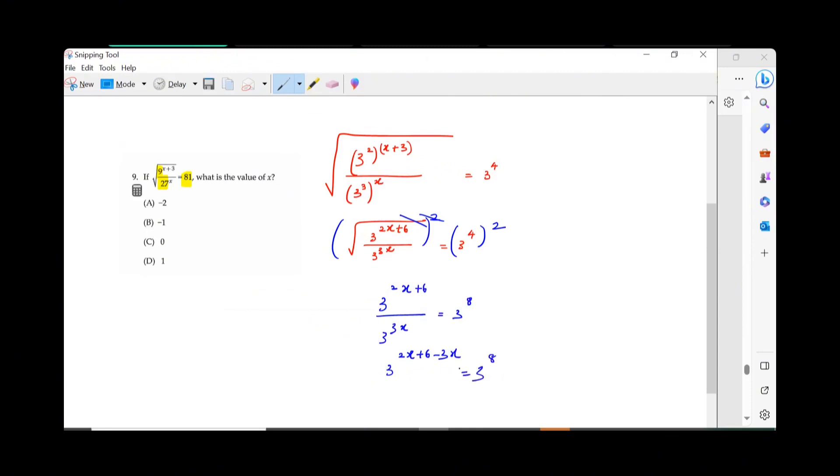The bases are equal, you can ignore them. What is 2x minus 3x? Negative x, and then plus 6 equals how much? 8. What should be the x? Negative x equals 2, so x equals negative 2.